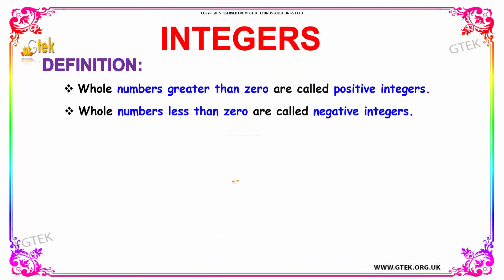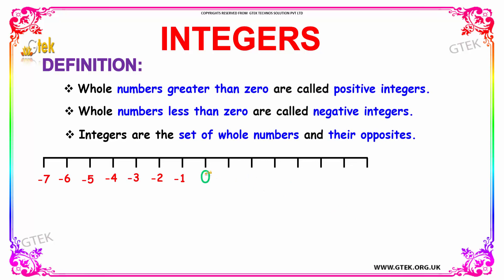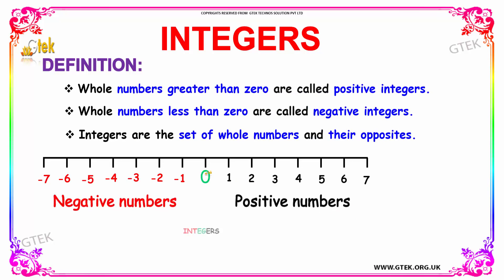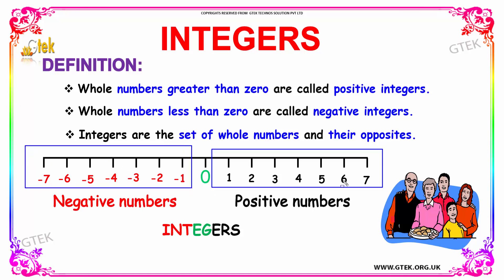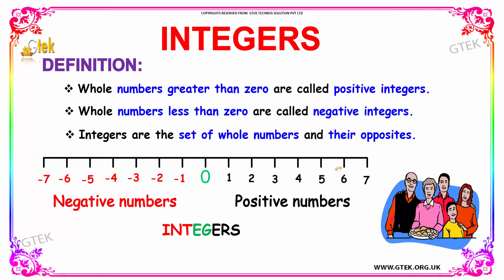So let us see what is meant by integers. Integers are a collection of positive and negative numbers. Positive and negative whole numbers along with zero are said to be integers. The numbers which are greater than zero are said to be positive integers, and the numbers which are less than zero are said to be negative integers. So integers are a set of whole numbers and their opposites.